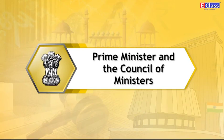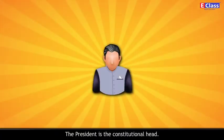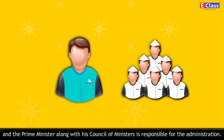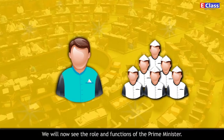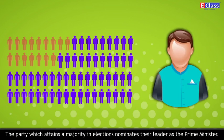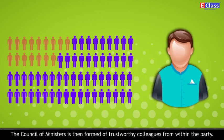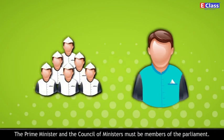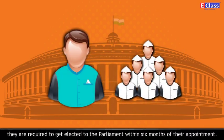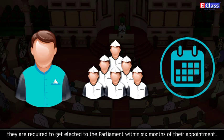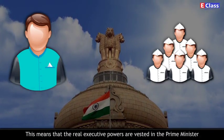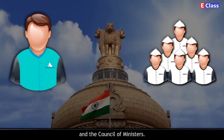The President is the constitutional head; however, in reality, his powers are nominal, and the Prime Minister along with his Council of Ministers is responsible for the administration. The party which attains a majority in elections nominates their leader as the Prime Minister. The Council of Ministers is then formed of trustworthy colleagues from within the party. The Prime Minister and the Council of Ministers must be members of Parliament. If they are not members, they are required to get elected to Parliament within 6 months of their appointment. The real executive powers rest with the Prime Minister and the Council of Ministers.